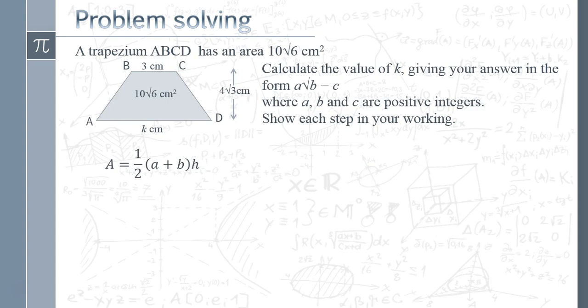We're going to start off, you're expected to know that the area of a trapezium is half (a + b) times h, where a and b are the opposite parallel sides and h is the distance between them. All we're going to do now is take that formula and put in the values that we've got. So we know the area is 10√6, we know the opposite sides a and b are k and 3, and we know that h is 4√3.